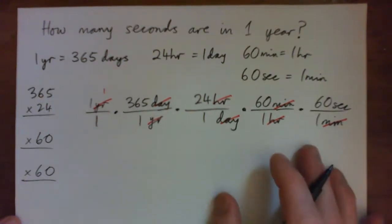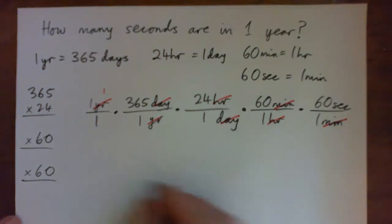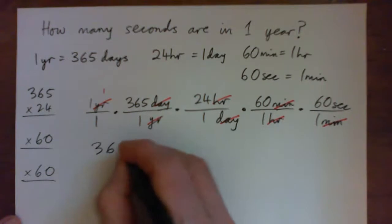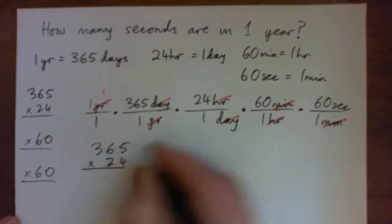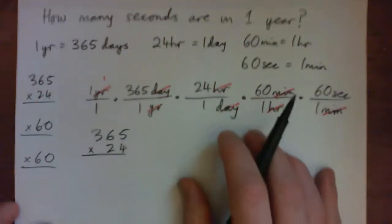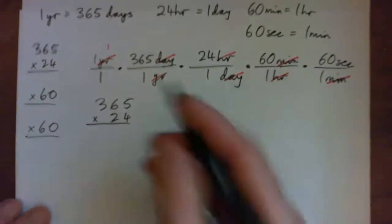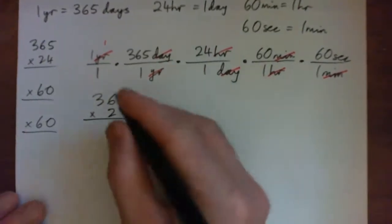I guess the only thing left to do is multiply them. I should have left space here. 365 times 24 - let's practice long multiplication. You can do this on a calculator if you want, but it's good practice.